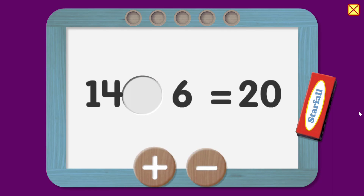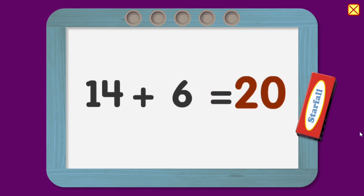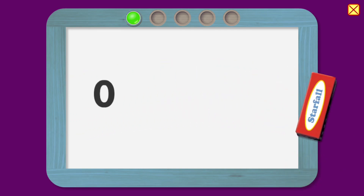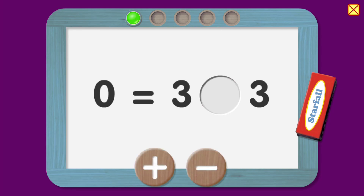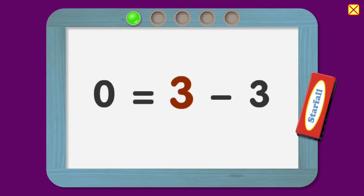Choose plus or minus. Good job. 14 plus 6 equals 20. Great job. 0 equals 3 minus 3.